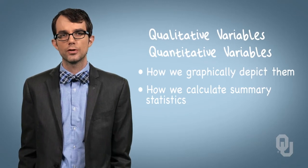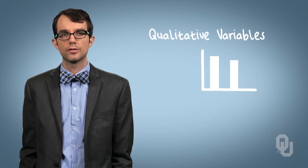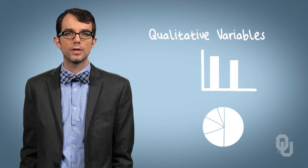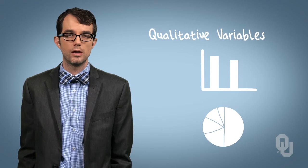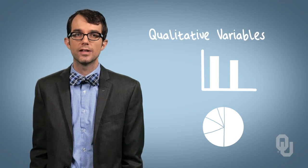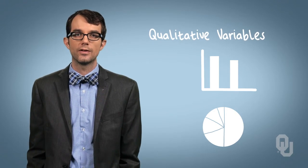Our approaches for depicting qualitative data were limited to bar graphs and pie charts, wherein we visualized the count of observations falling into each of several categories. With these graphical depictions, we get a sense of how frequently the different qualitative categories occur.